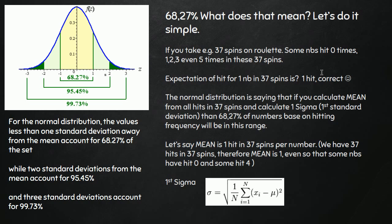In general, if I read the sentence explaining this percentage - at least this 68% - the normal distribution is saying that if you calculate the mean, which is really the mean like an average from all hits which you had in 37 spins on roulette, and how to calculate the first sigma, like the first standard deviation from this mean, then you can say that 68% of numbers, based on the hitting frequency, will be in this range. Almost 70% of numbers will be in a certain range which is calculated based on average hit.